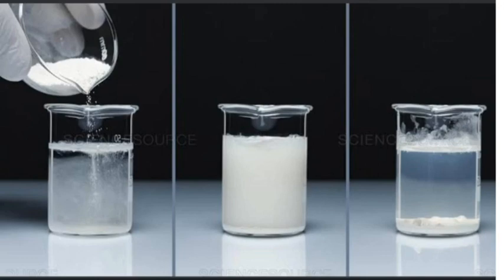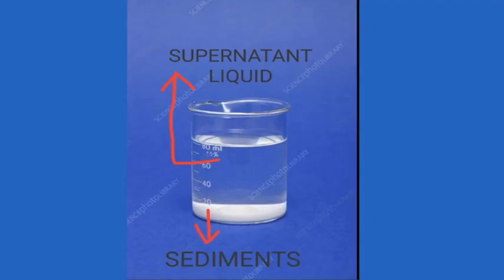The solid particles that settle down at the bottom of the container are called sediments. The clear liquid above the sediments is called supernatant liquid. You can see in this picture the sediments are formed at the bottom and the clear liquid above is the supernatant liquid.